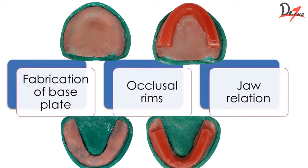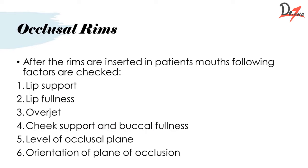For jaw relation, you need to consider certain steps. You will check the lip support and lip fullness, then check overjet, then check cheek support and buccal fullness, and finally orient your maxillary and mandibular rims according to the plane of occlusion. The importance of lip support or lip fullness is that if it is too much or inadequate, it will affect the aesthetics of the denture.